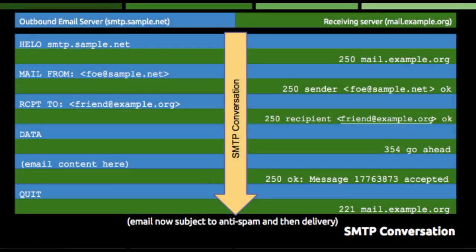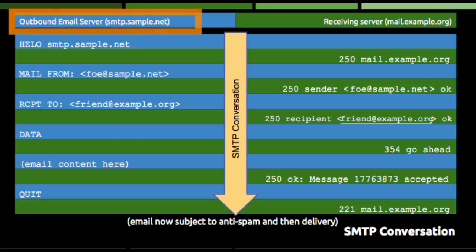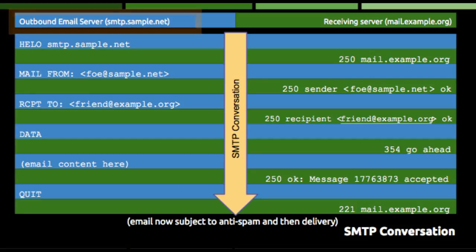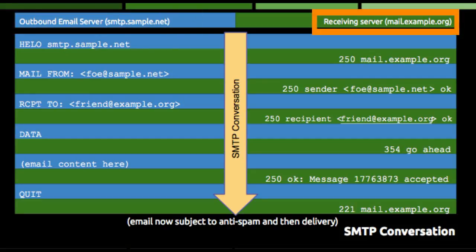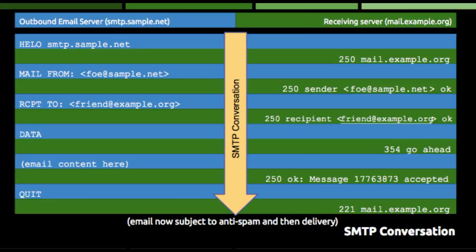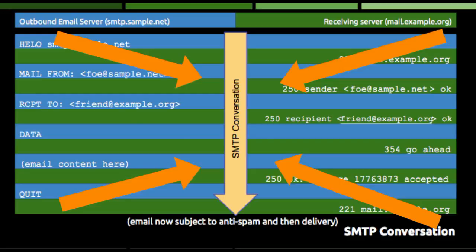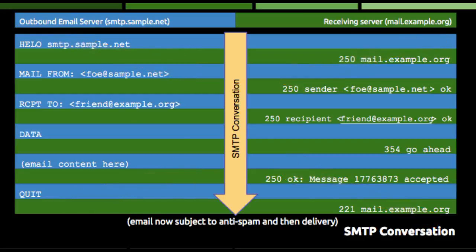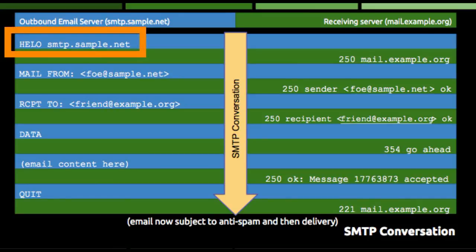We'll walk through a sample conversation. The sample is using smtp.sample.net as the outbound server, shown in blue at the top, and mail.example.org as the receiving server, in green. The conversation flows from top to bottom as indicated by the giant arrow going down the middle of the screen. The very first command that the outbound server issues after connecting to the receiving server is the hello command, which includes the name of the outbound server. This is sort of like introducing oneself at a party — hello, my name is outbound email server.